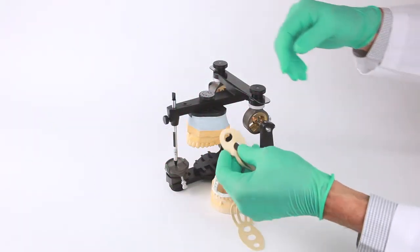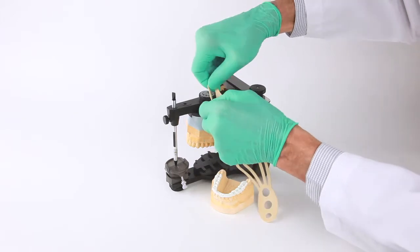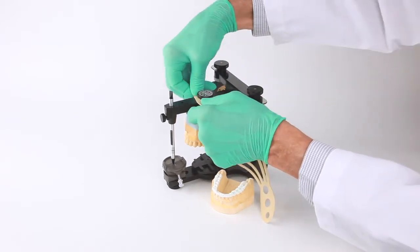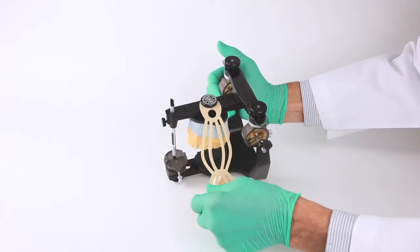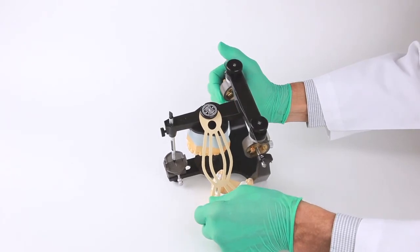Once the maxillary cast has been mounted with the mounting jig or facebow registration, the flexi-mount is attached by placing one of the two large holes on the end of the flexi-mount over the thumb screw on the articulator arm.